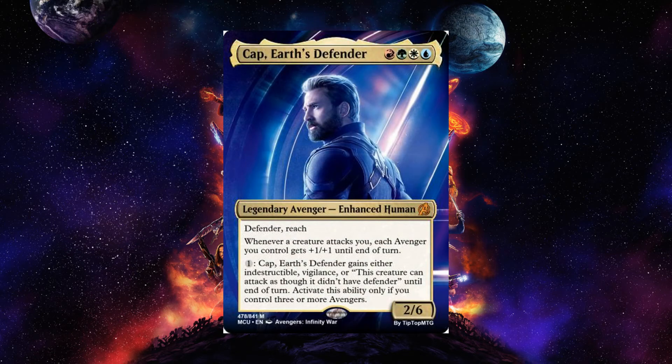Cap Earth Defender is a legendary Avenger enhanced human 2-6 with defender and reach. Whenever a creature attacks you, each Avenger you control gets +1/+1 until end of turn. He's much more about defense versus Iron Man's attack-oriented counters. You can pay one and Cap Earth Defender gains either indestructible, vigilance, or this creature can attack as though it didn't have defender until end of turn — but only if you control three or more Avengers. If he's with his team he can attack, and he gains indestructible and vigilance. Tony Stark is making people Avengers; Cap just wants to fight alongside them.